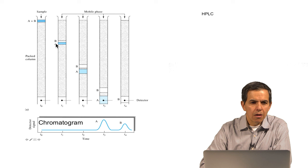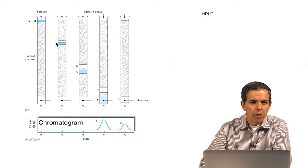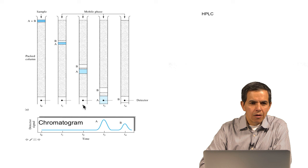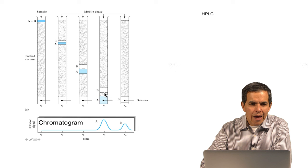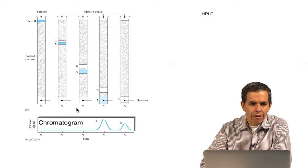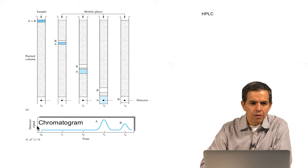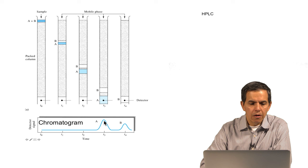As time progresses, this separation becomes more pronounced between A and B. Finally, A reaches the end of the column, reaching the detector. This is represented at the bottom of this diagram as a function of time—this is a chromatogram, intensity or detection versus time. T3 corresponds to the detection of A. At a subsequent time, T4, B will reach the detector and appear as a separate band.